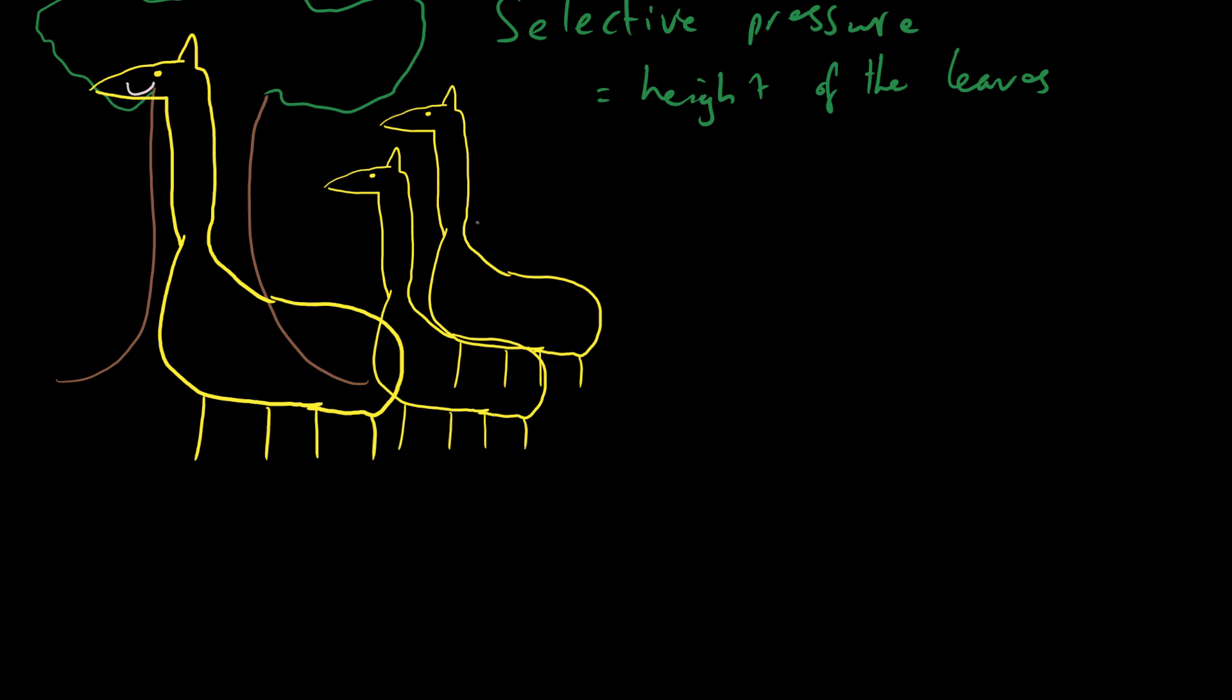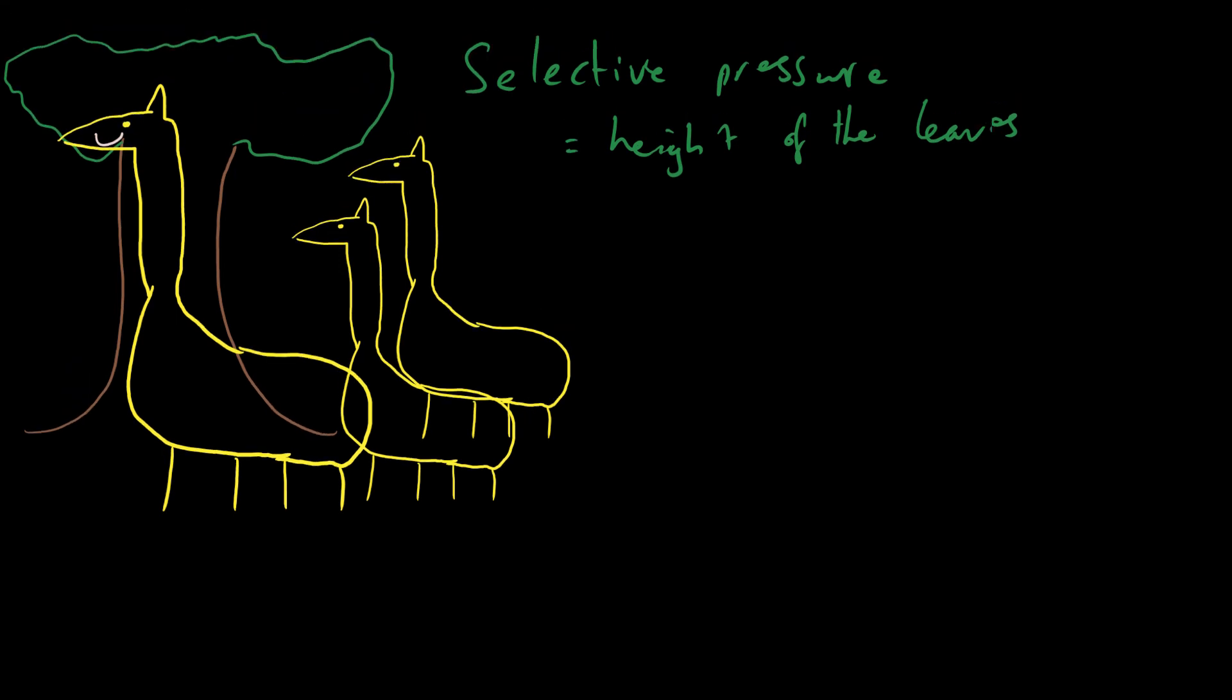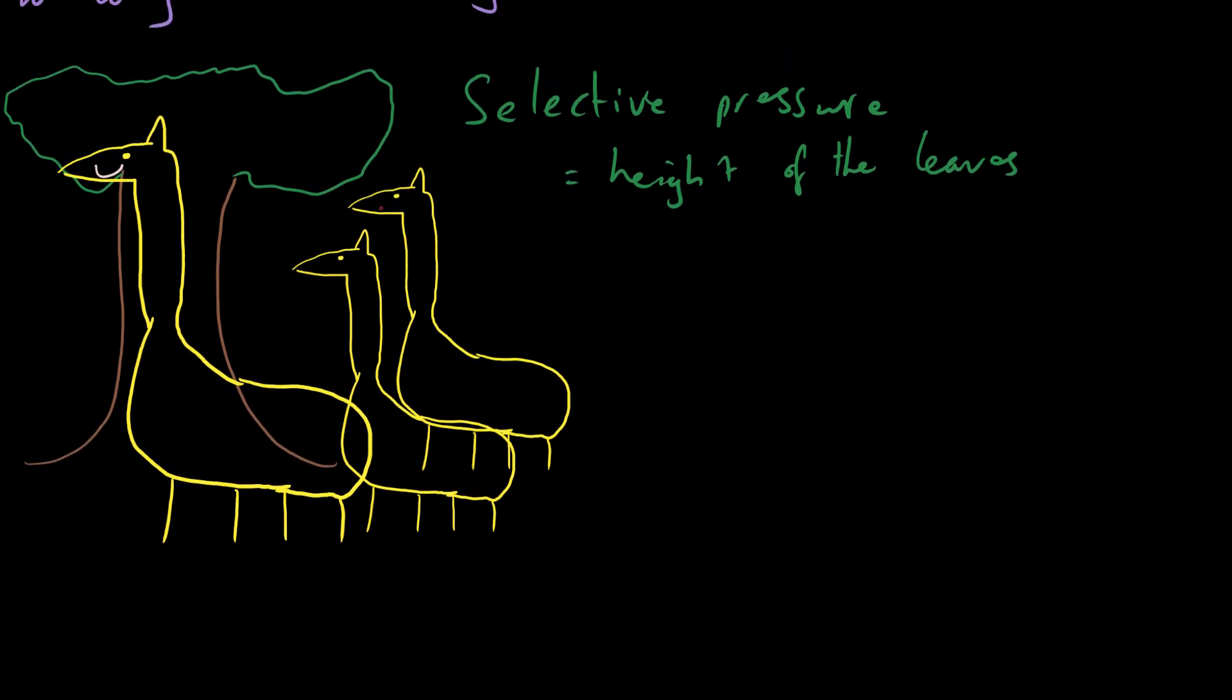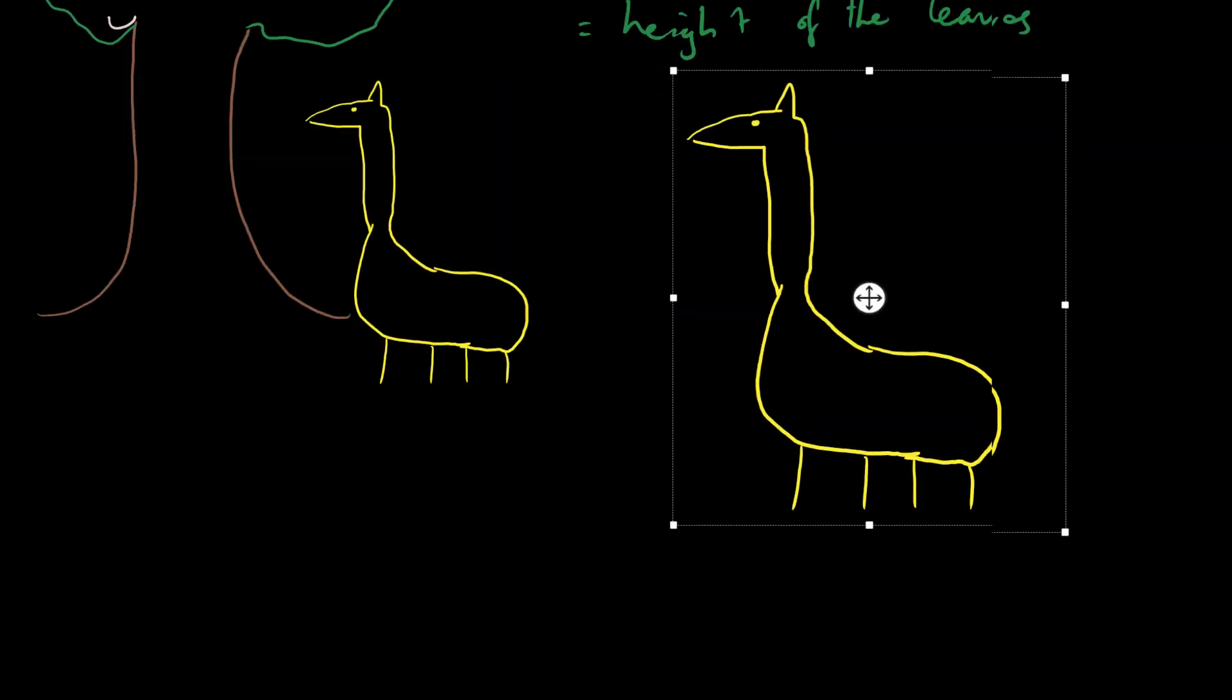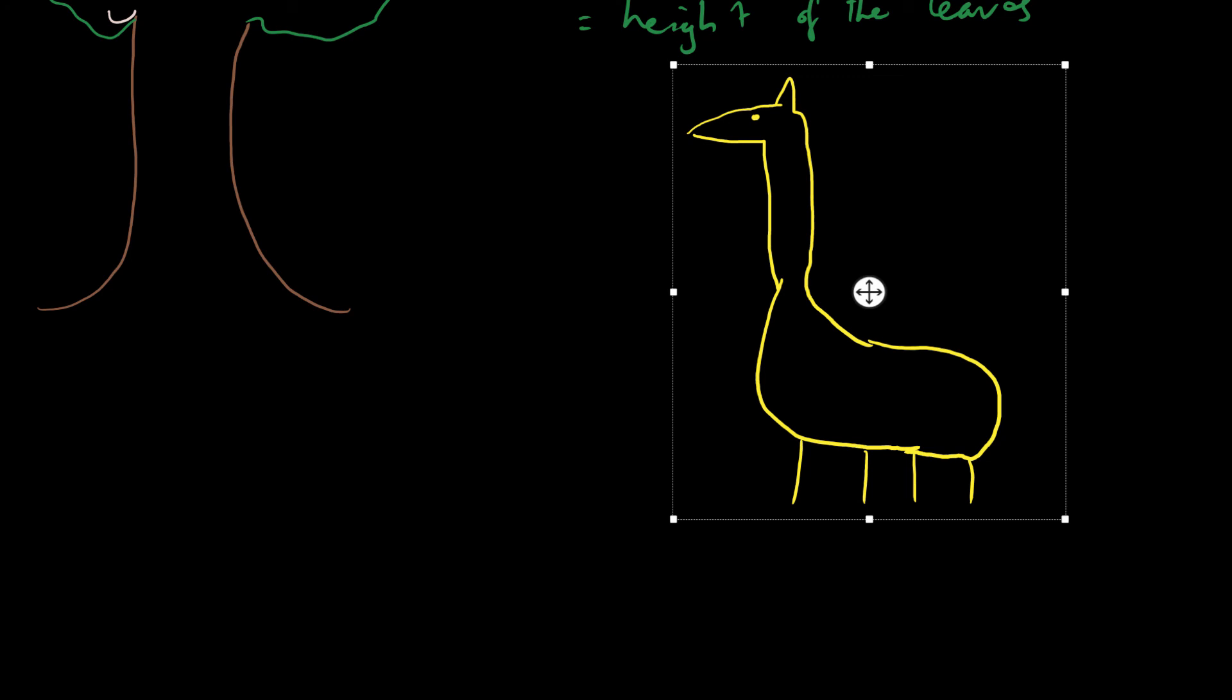The other giraffes, these guys, are actually going to die out because they can't obtain their food. So these giraffes cannot obtain their food and so they die. So these ones have died. And so that means that having been deleted, only the big giraffe is left to reproduce. So this one has also died. So this guy reproduces.